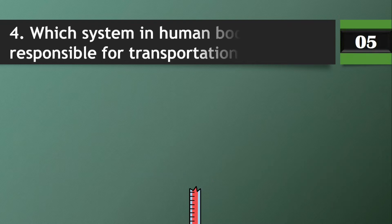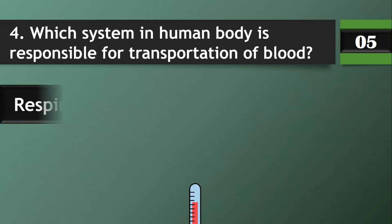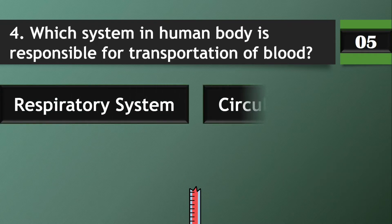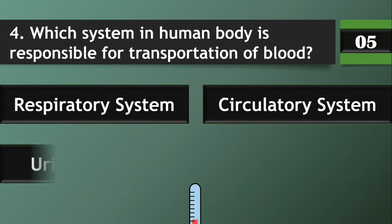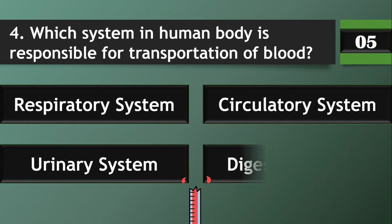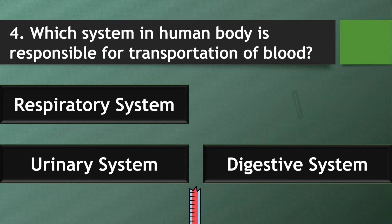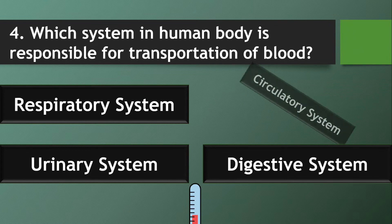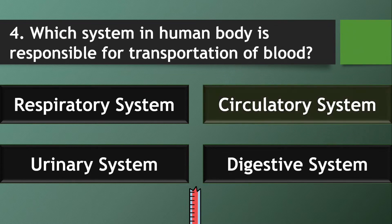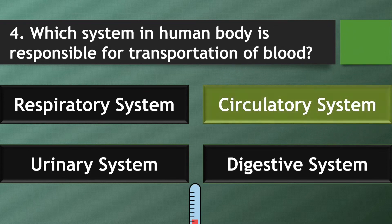Question 4: Which system in the human body is responsible for the transportation of blood? Answer: Circulatory system.